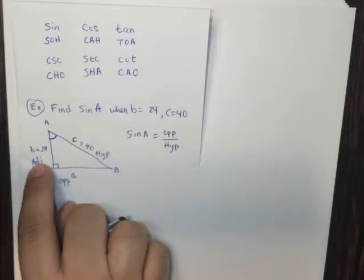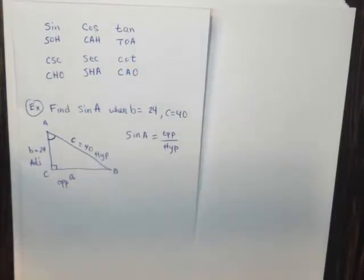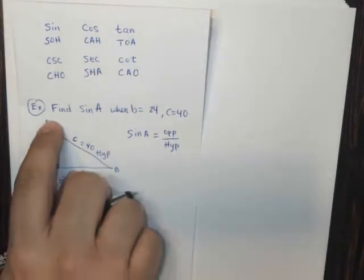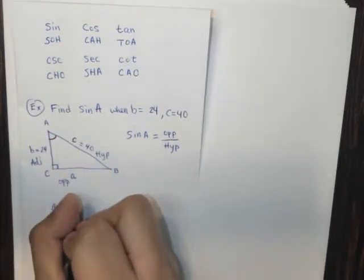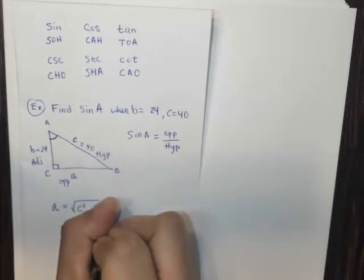So I'm going to have to use the adjacent and the hypotenuse to find the opposite. And that's really simple. Remember, A squared plus B squared equals C squared, all right? The Pythagorean theorem. So if you just manipulate that, A will then equal the square root of C squared minus B squared.